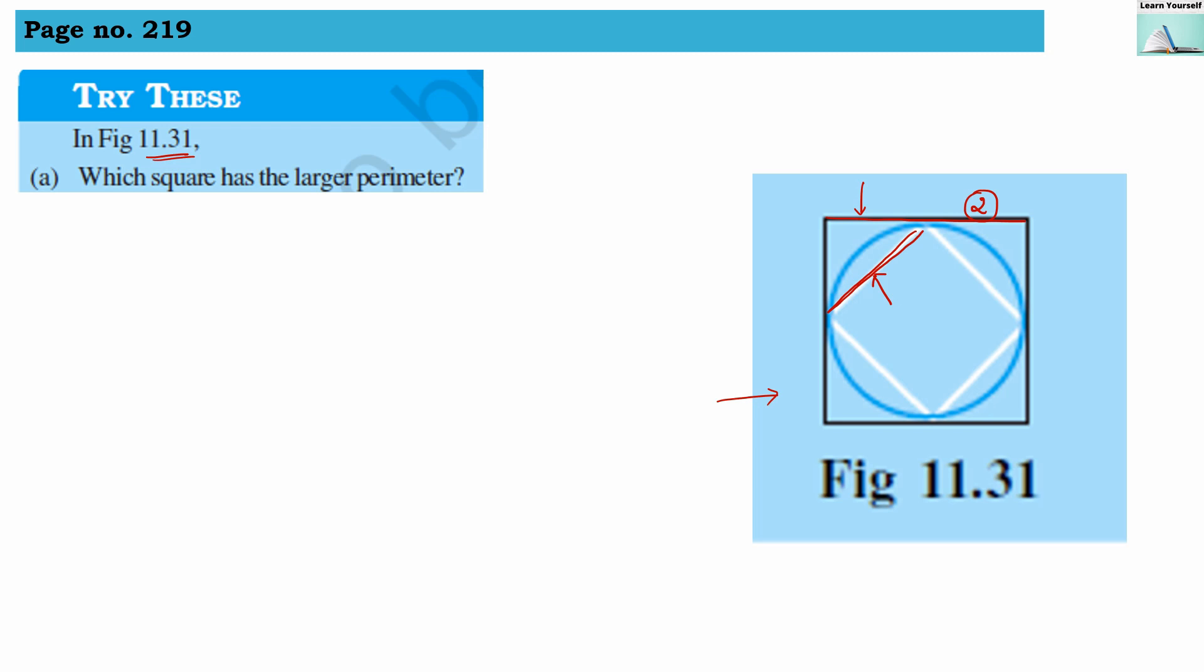You can also check with the scale. You can keep the scale here. Any one side you can measure and you can find out the perimeter for inner square and outer square.